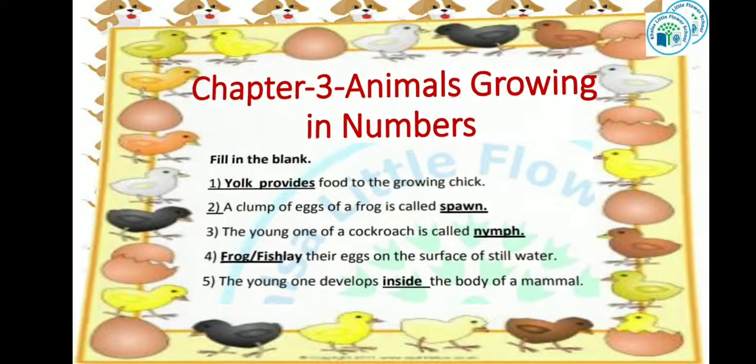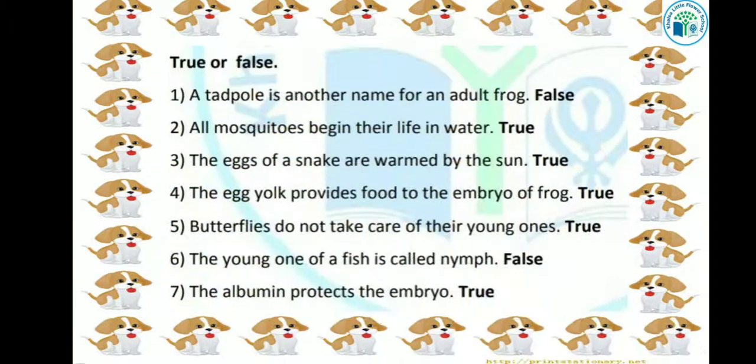Now kids, our next topic is true or false. First question is: a tadpole is another name of an adult frog. Adult frog को tadpole भी कहा जाता है — तो ये sentence false है. क्योंकि frog की life cycle का जो third stage होता है, embryo के बाद का stage, उसे tadpole कहा जाता है.